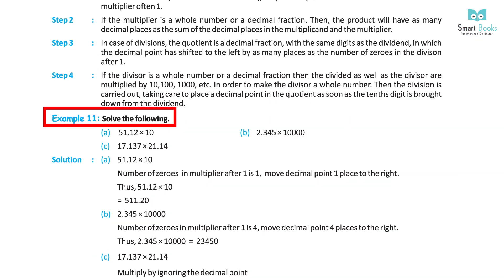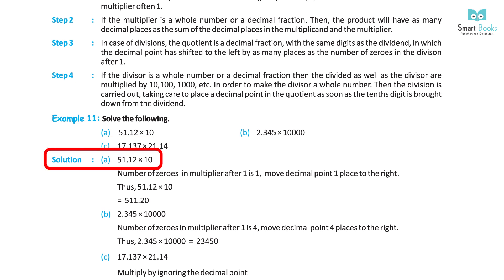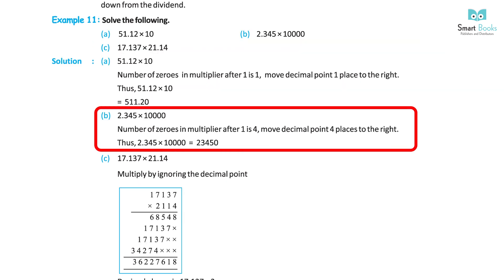Example 11: Solve the following. A. 51.12 × 10 — the multiplier has 1 zero after 1, so move the decimal point 1 place to the right. Thus 51.12 × 10 = 511.2. B. 2.345 × 10,000 — the multiplier has 4 zeros after 1, so move the decimal point 4 places to the right. Thus 2.345 × 10,000 = 23,450.